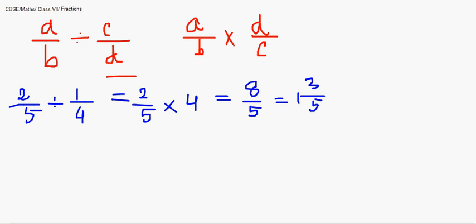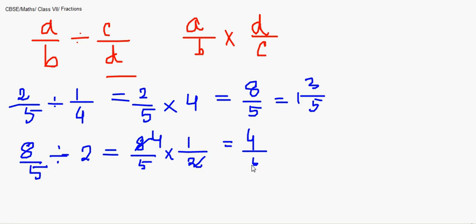Now if I am given 8 by 5 divided by 2, I will be finding the reciprocal of 2, that is 1 by 2. So I can cancel this. I get 4 thereby giving us 4 by 5 as our answer.